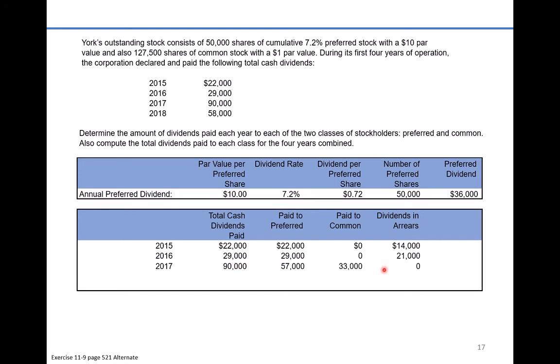There are times when preferred shareholders might have their certificates stamped in a way that calls their dividends to be participatory. In that case, they may possibly share in the additional amount going to common shareholders on a pro-rata basis or based on some formula. But this problem is straightforward — all of the remaining balance goes directly to the common shareholders.